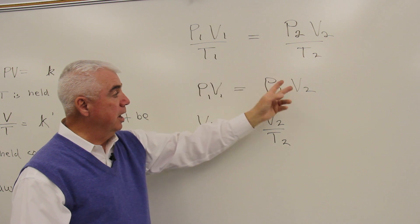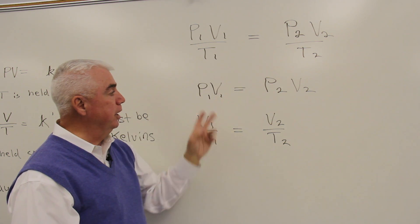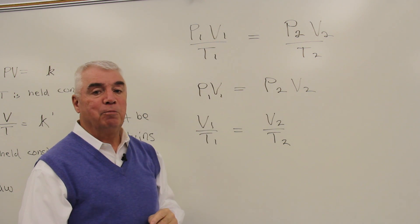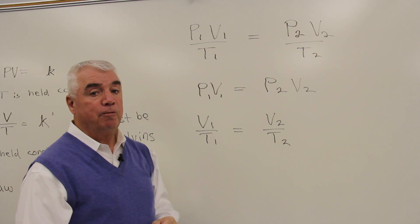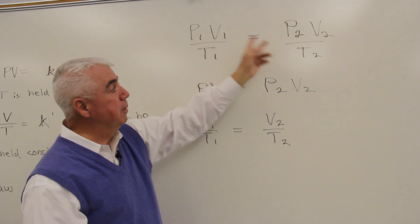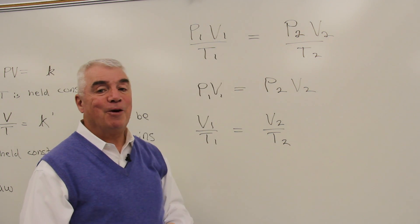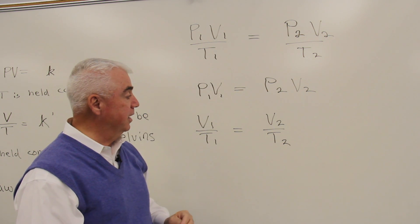Using this particular equation, it's got four variables. If we know three of those, we could solve for the fourth. Or this one up here has six variables. If we know five of those, we can solve for the sixth.